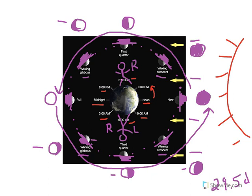New moon is overhead at noon. The midpoint for waxing crescent is overhead at 3 p.m. First quarter is overhead at 6 p.m. Waxing gibbous is overhead at 9 p.m. Full moon is overhead at midnight. Waning gibbous is overhead at 3 a.m. Third quarter is overhead at 6 a.m. And the midpoint for waning crescent is overhead at 9 a.m.